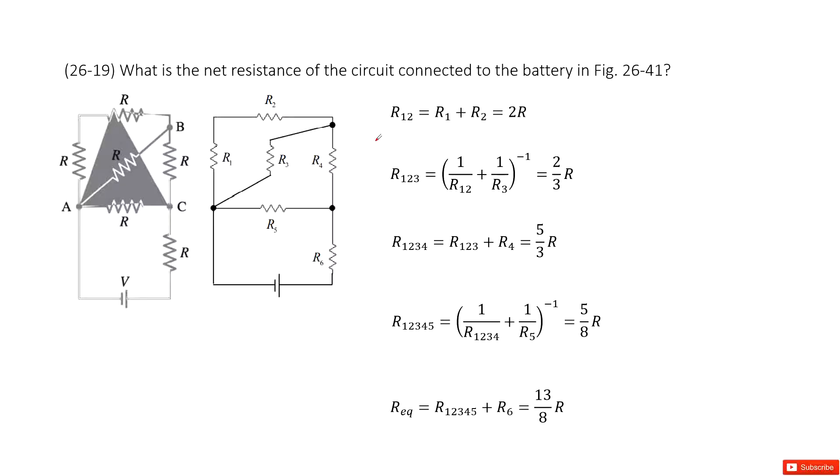Chapter 26 is about DC circuits. Then we look at this system. We need to determine the net resistance of the circuits connected to the battery. That means we need to find the resistance from this point to this point, right?